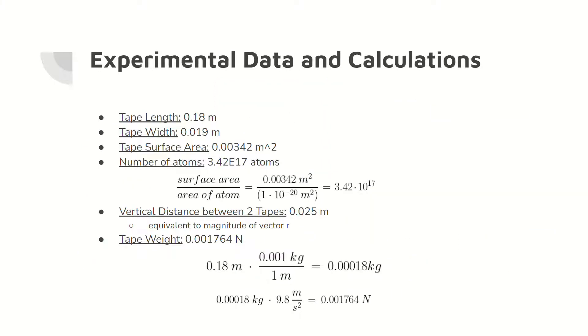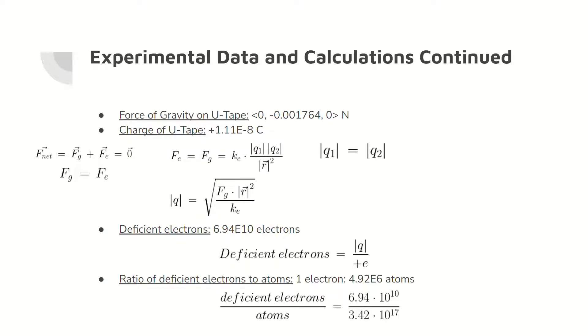Here are the experimental data and subsequent calculations from the experiment with the charged tapes. Importantly, the number of atoms in the tape is calculated, as well as the tape weight. The charge of the u-tape is shown here, with the relevant equations and calculation steps shown. Note that the magnitude of the electric force is equal to the magnitude of the gravitational force. We know that the charge is positive, so there is a deficit of electrons on the tape's surface. The deficit in electrons and the deficient electron-to-atom ratio are shown.